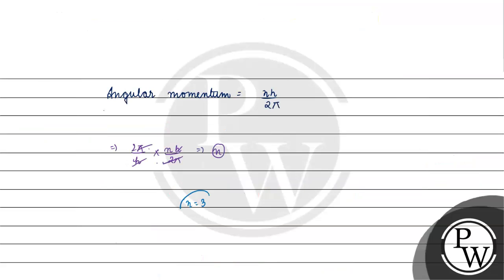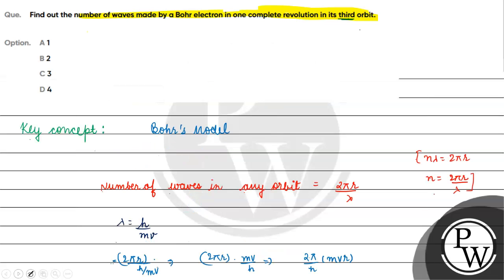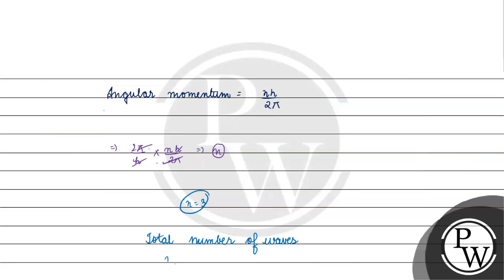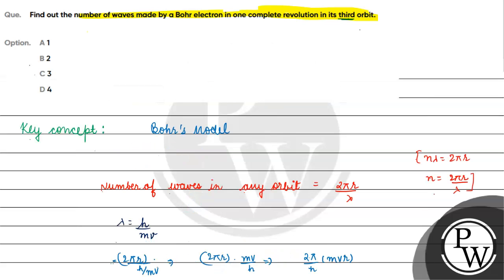The number of waves made by a Bohr electron in the third orbit equals three. Coming back to the question, the correct answer is option C: three. I hope you understood it well. Thank you, all the best.